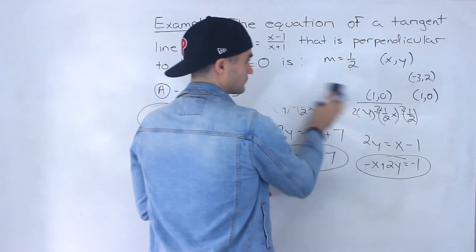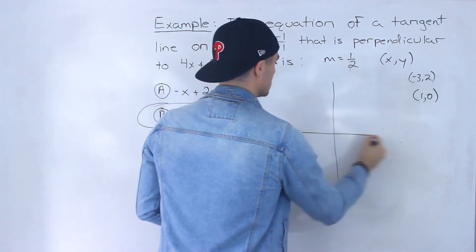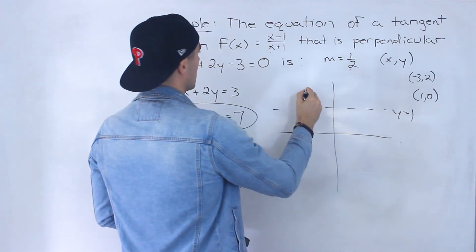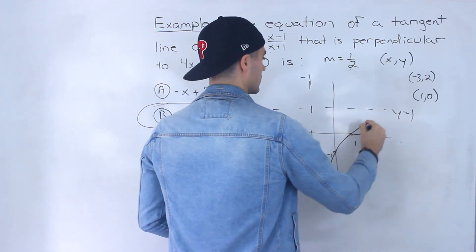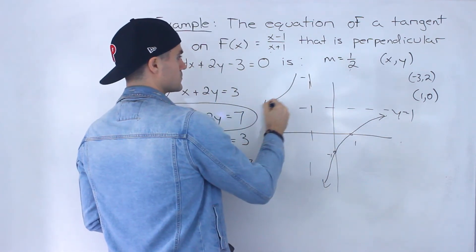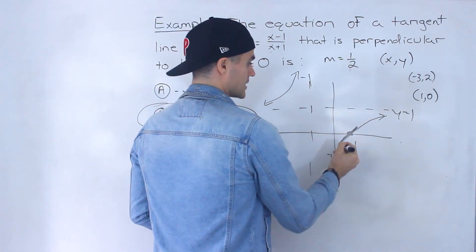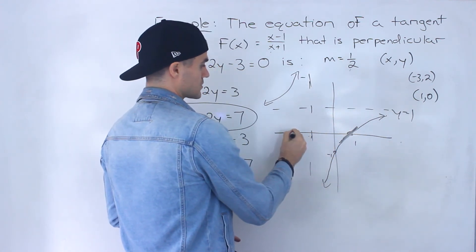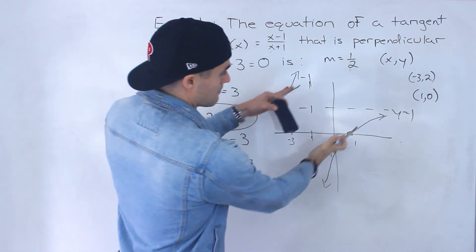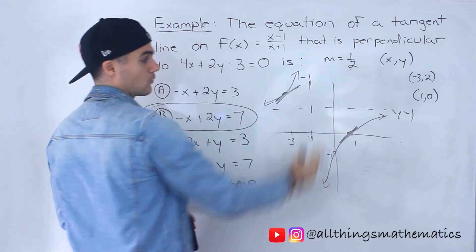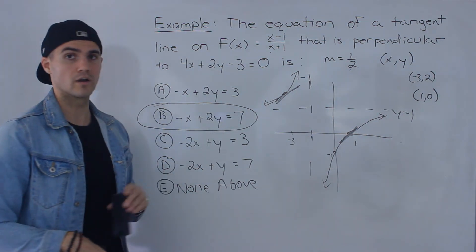The fact that we got 2 tangents actually makes sense graphically. Redrawing the function with horizontal asymptote at 1, vertical asymptote at negative 1: at (1, 0) there's one tangent, and at (negative 3, 2) — which is over on the left branch — there's the other tangent. Both tangents are parallel since they both have slope 1 over 2, but they are two separate tangents. Only one of them was one of the multiple-choice answers.